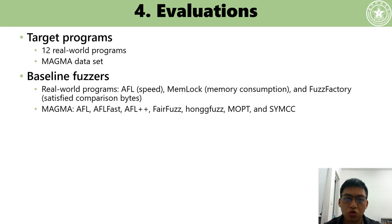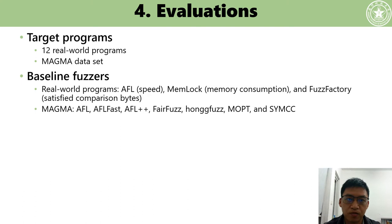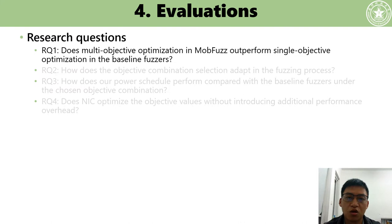In the evaluation, we select two types of target programs: 12 real-world programs and the MAGMA dataset. For baseline fuzzers on real-world programs, we select AFL, Memlock, and FairFuzz—all single-objective optimization fuzzers with objectives of execution speed, memory consumption, and satisfied comparison bytes. For the MAGMA dataset, we select AFL, AFL-Fast, AFL++, FairFuzz, HOM-Fast, MOBT, and SIMCC.